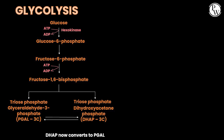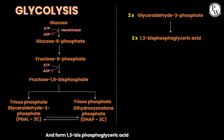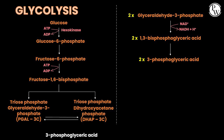DHAP now converts to PGAL. Both PGALs get phosphorylated, forming 1,3-bisphosphoglyceric acid, while NAD+ forms NADH and H+. This now forms 3-phosphoglyceric acid, while an ATP gets synthesized — that's glycolysis.